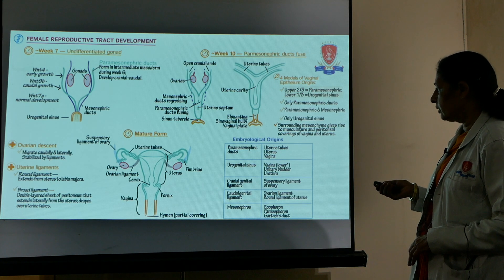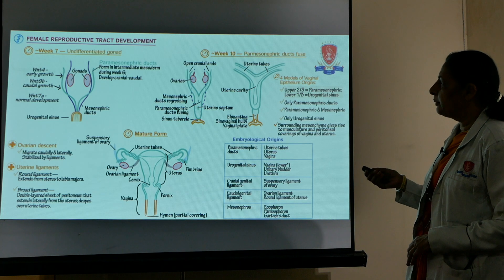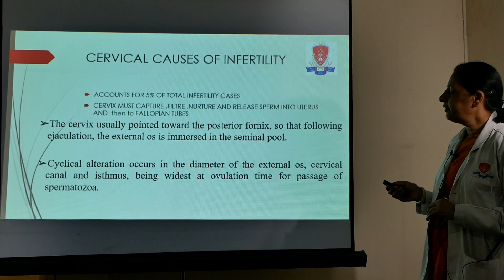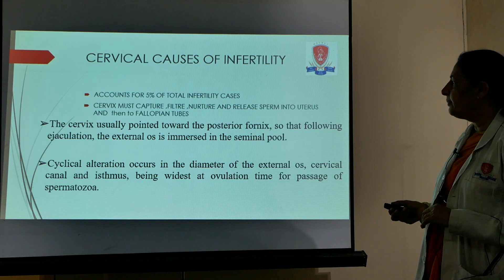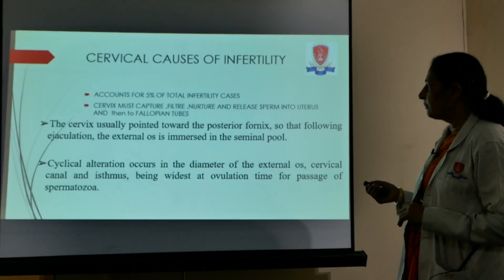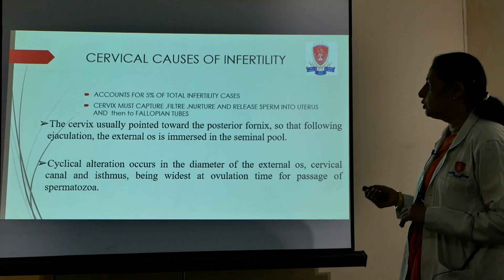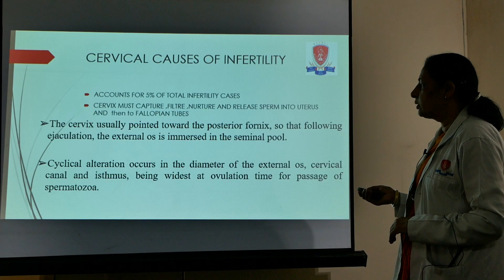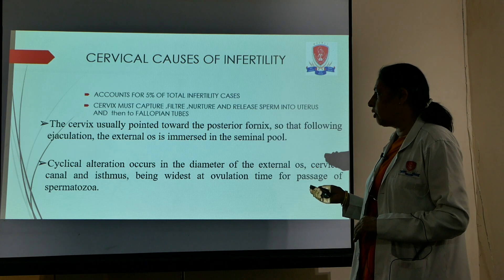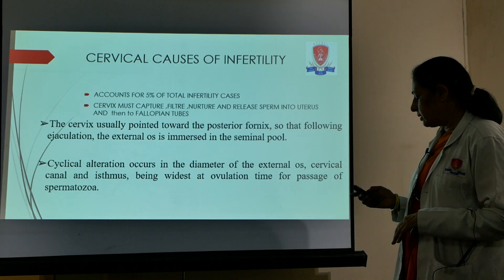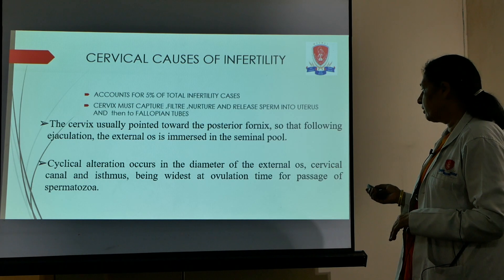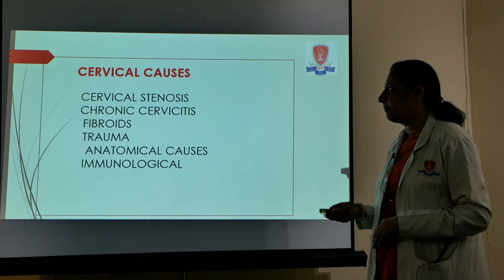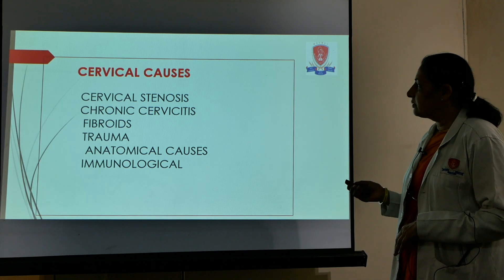Cervical causes of infertility account for about 5% of the total causes. The cervix must capture, filter, nurture, and release the sperm into the uterus and then into the fallopian tube in order to conceive. The cervix usually points down towards the posterior fornix so that following ejaculation, the external os is immersed in the seminal pool. Any cervical alteration occurs in the diameter or external os and canal, with the isthmus being widest at ovulation for passage of spermatozoa.